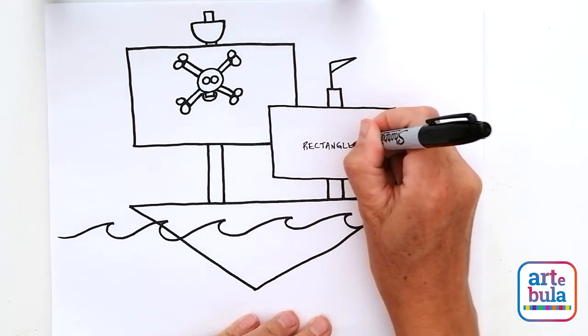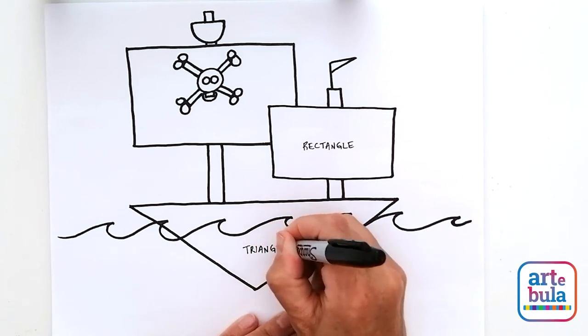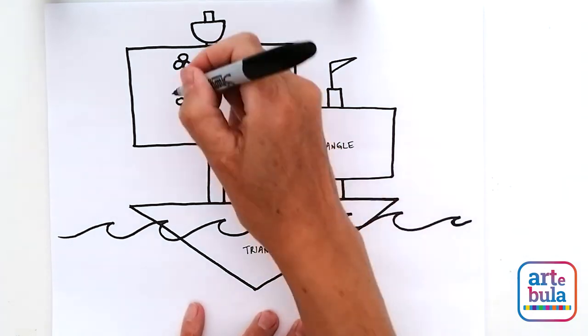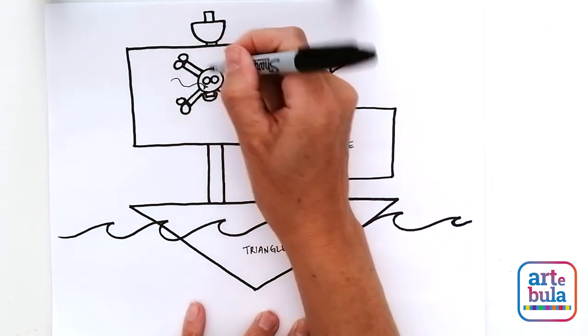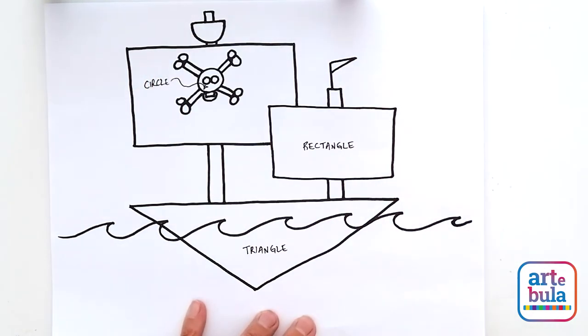And this shape is a rectangle. This shape is a triangle. And this is a circle.